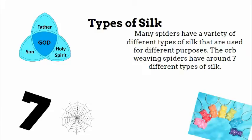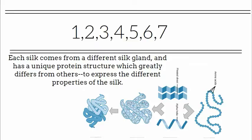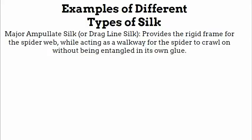Many spiders have a variety of different types of silk used for different purposes. The orb weaving spiders have around seven different types of silk. Each silk comes from a different gland and has a unique protein structure which greatly differs from the others, expressing the different properties of the silk.